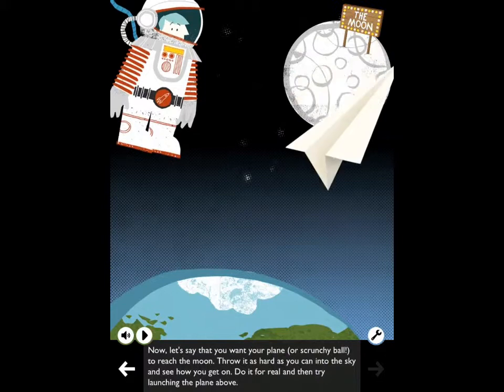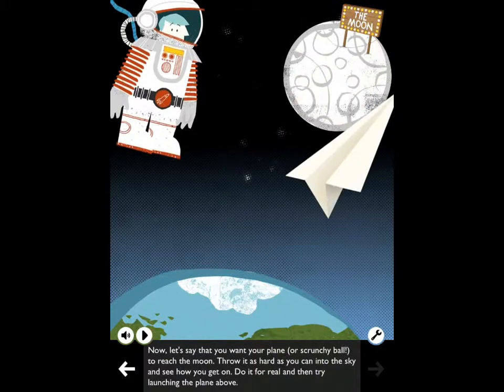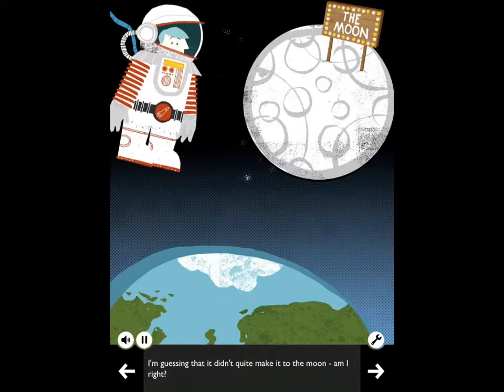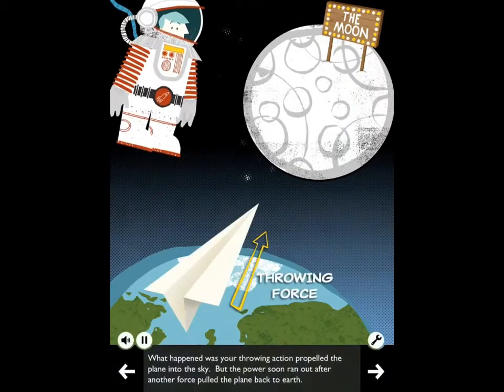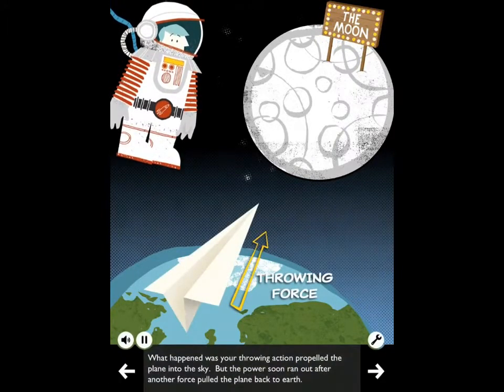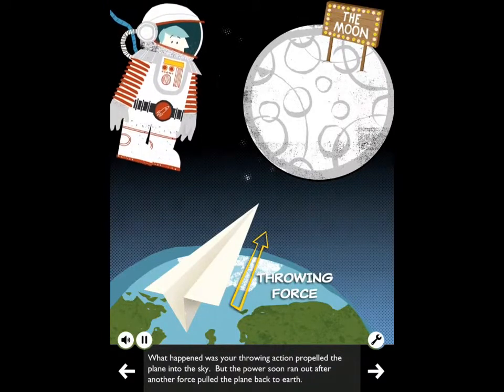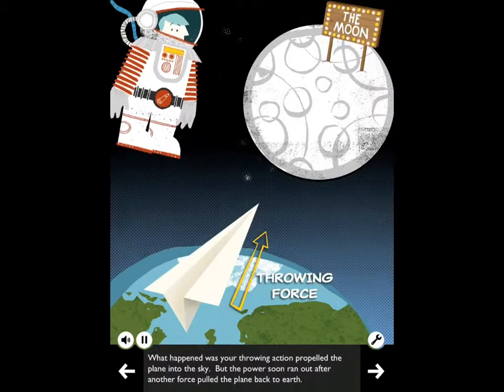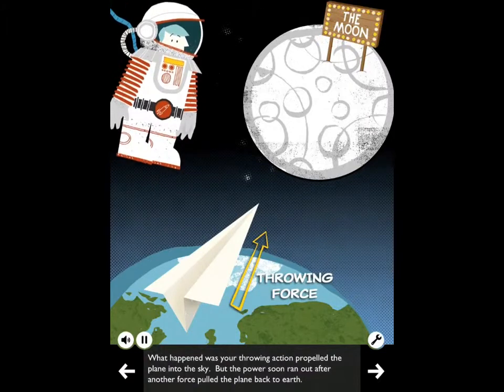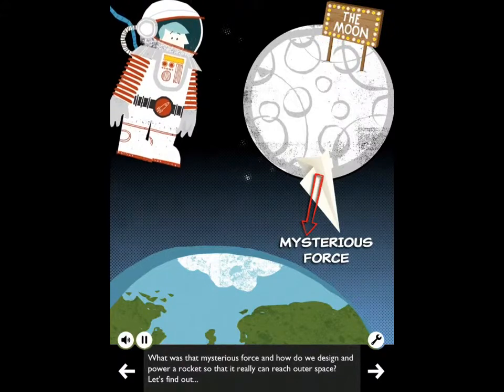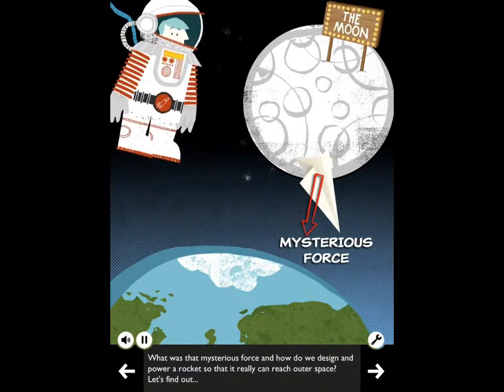I'm guessing that it didn't quite make it to the moon. Am I right? What happened was your throwing action propelled the plane into the sky, but the power soon ran out after another force pulled the plane back to Earth. What was that mysterious force? And how do we design and power a rocket so that it really can reach outer space? Let's find out!